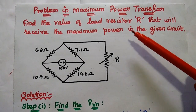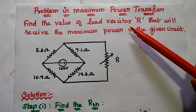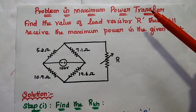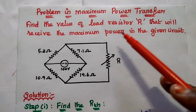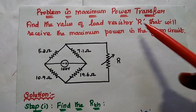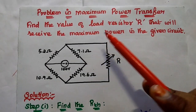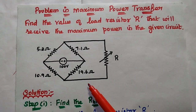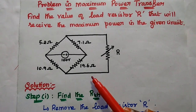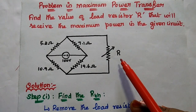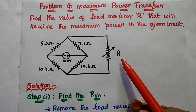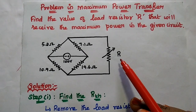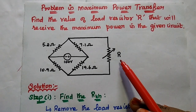Now we are going to solve one important problem in maximum power transfer theorem. Find the value of load resistor R that will receive the maximum power in the given circuit. We are going to find out this load resistor R with the condition that maximum power is received.